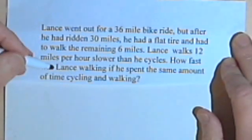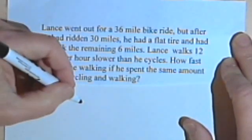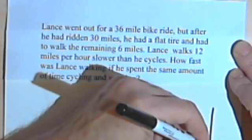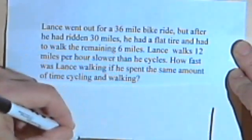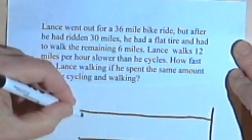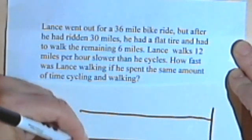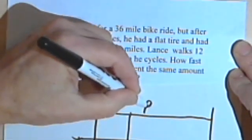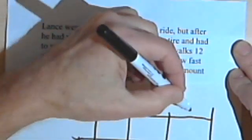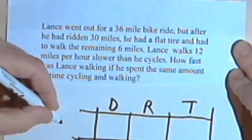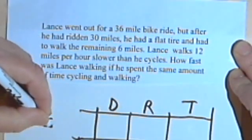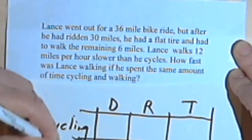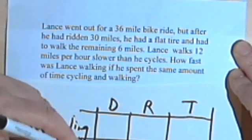Okay, so we're dealing with distances and rates and times, so I'm gonna make a table. And in the table I'll have a column for the distance and a column for the rate and a column for the time. And of course I'll have one row for his cycling information and one row for walking information.